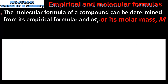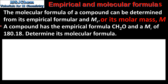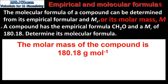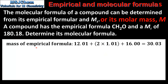The molecular formula of a compound can be determined from its empirical formula and its relative molecular mass. So let's look at an example. A compound has the empirical formula CH2O and a relative molecular mass of 180.18. Determine its molecular formula. The first step is to find the mass of the empirical formula, using the relative atomic masses of the atoms in the empirical formula.